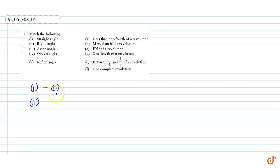Right angle means 90 degrees, therefore that is one-fourth of a revolution, so the answer is D.